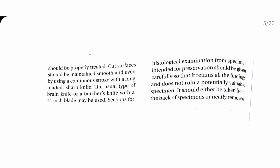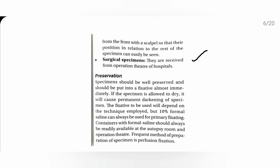Specimens can be collected either from autopsy or surgical procedures. For autopsy specimens, proper treatment and a proper cut surface are needed, because an irregular surface is problematic. Then you can preserve and fix it. The specimen should be well preserved and placed in a fixative almost immediately. As soon as you take the specimen, keep it for fixation. Ten percent formal saline can always be used for primary fixation — you can decide on other techniques later, but immediately put it in 10% formal saline.